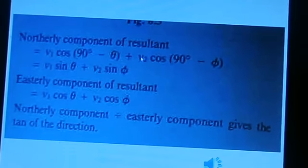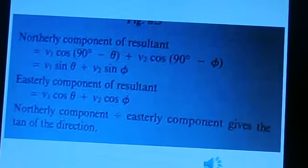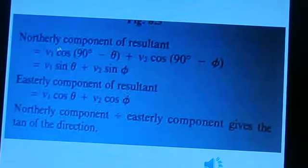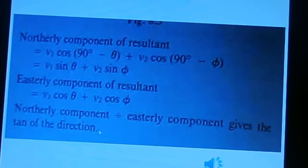The horizontal component of the resultant is V1 cos theta plus V2 cos theta. The vertical component is V1 sine theta plus V2 sine theta.